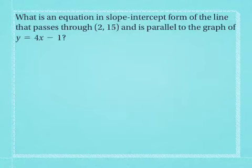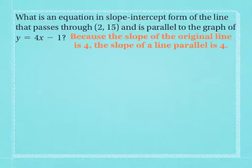This first example says: what is an equation in slope-intercept form of the line that passes through (2, 15) and is parallel to the graph of y equals 4x minus 1? We just said that parallel lines have to have the same slope. The equation we want to write a parallel equation to is y equals 4x minus 1. In slope-intercept form, the slope is 4. Because the slope of the original line is 4, the slope of a parallel line is also 4.